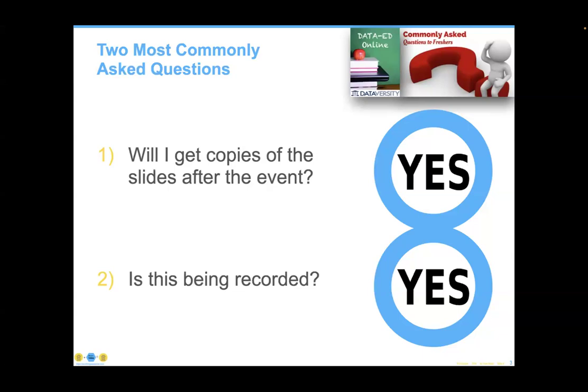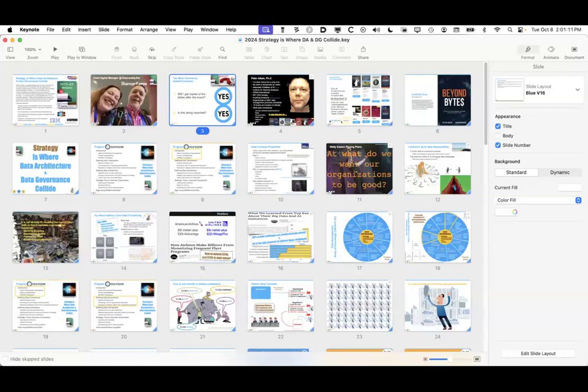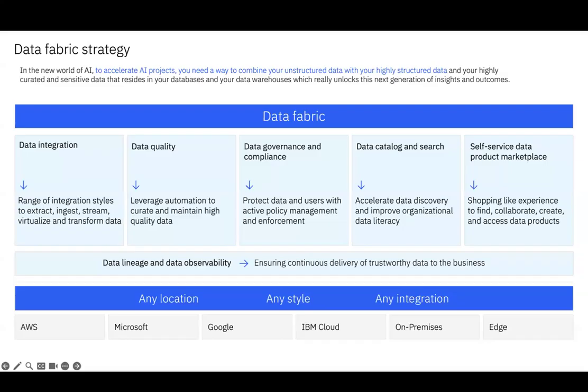Now let me pass it to Scott for a word from our sponsor IBM. My name is Scott Broca, I lead our product team at IBM for our data and AI offerings across our portfolio. I really want to start by giving all the data people a call out, as we talk to a lot of clients about how they're going to be successful with analytical and AI use cases.